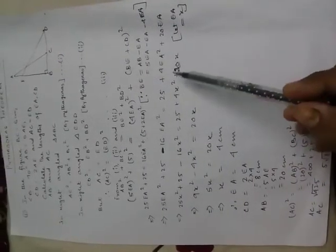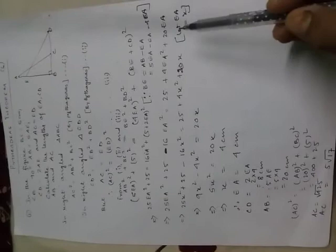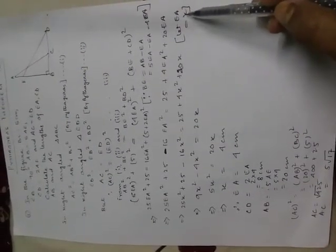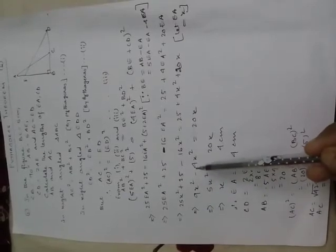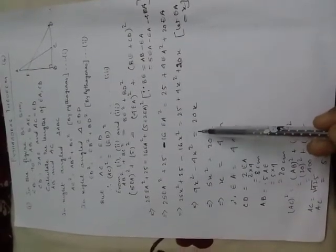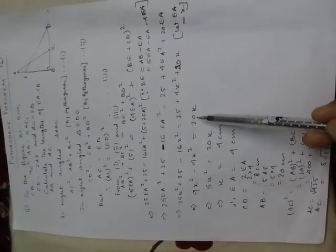Now, 25x² plus 25 minus 16x² equals 25 plus 4x² plus 20x. Why? I have taken EA as x. So, 9x² minus 4x² equals 20x.